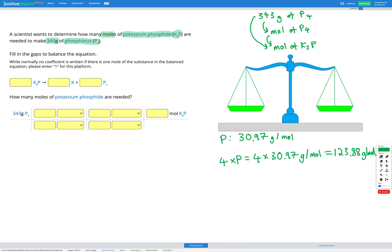And remember, that means that 123.88 grams of P4 is equal to one mole of P4. So that's our conversion factor that we're now going to use in our step one, which is going from grams of P4 to moles of P4. So let's go ahead and fill in that first step in our conversion table.